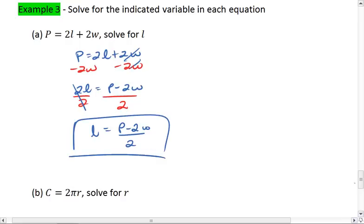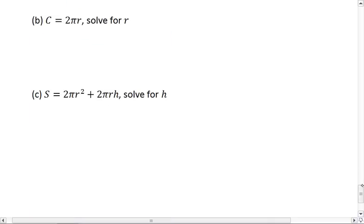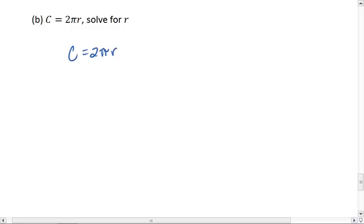Okay, how about example B? We are given C equals 2 pi R, which is the formula for the circumference of a circle. But we want to solve for R. We'll start by dividing both sides by 2 pi. And that gives us R equals circumference divided by 2 pi.